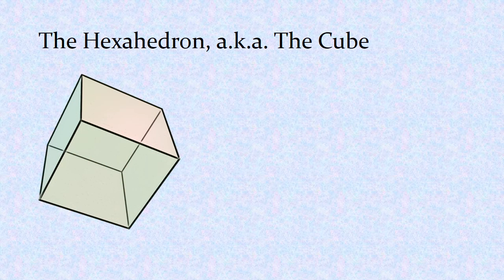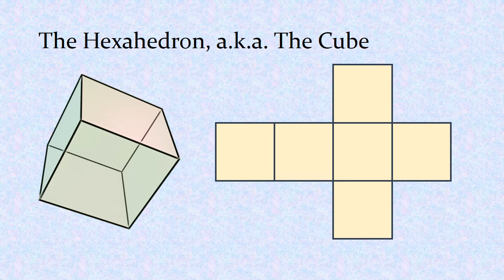The cube or hexahedron — the pattern looks like this. You've probably seen something like this if you ever created a cardboard box. The center of the cross would be the bottom of the box, and the leftmost square would be the top of the box. You fold up the sides, tape them together, and fold the top on top of the box.